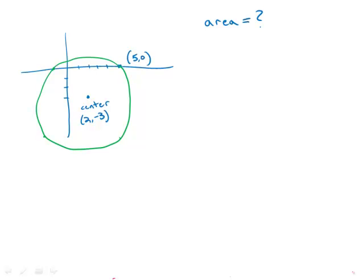In the coordinate plane, a circle has a center of 2, negative 3 and passes through the point 5, 0. What is the area of the circle?